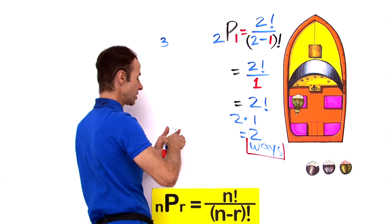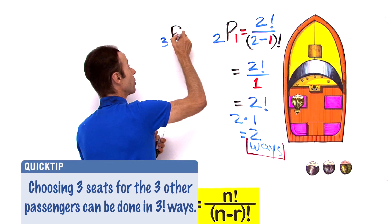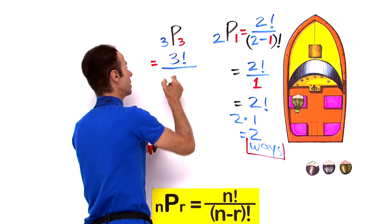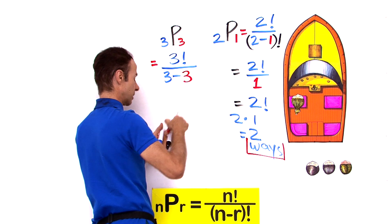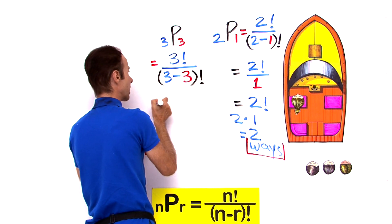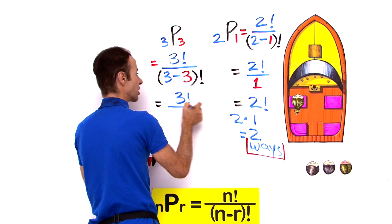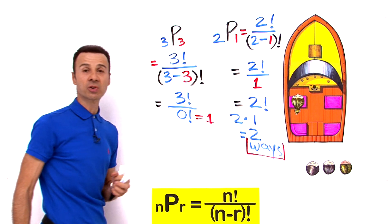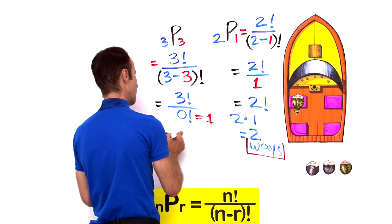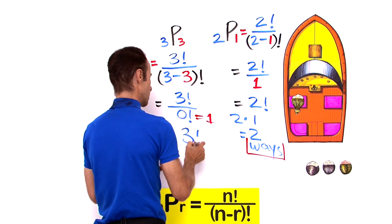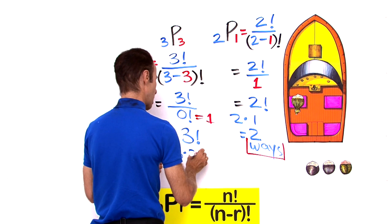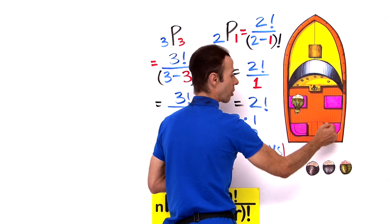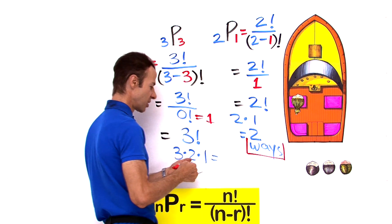So let's work out the arrangements for 3 seats with 3 passengers. That equals 3 factorial all over (3 minus 3) factorial. 3 minus 3 is 0 factorial, and 0 factorial equals 1. So that equals 3 factorial by itself, which is 3 times 2 times 1, equaling 6. There are 6 ways to arrange 3 passengers in 3 seats.